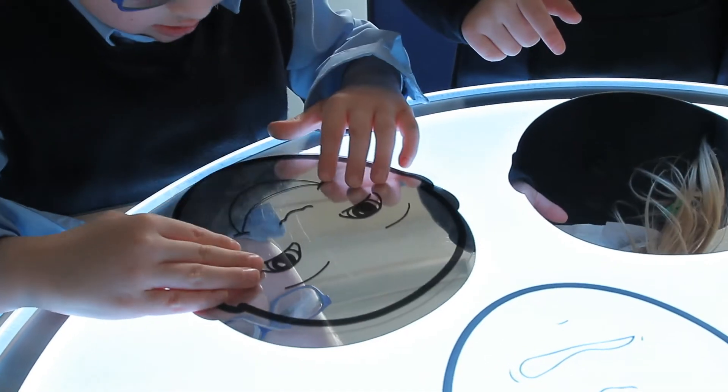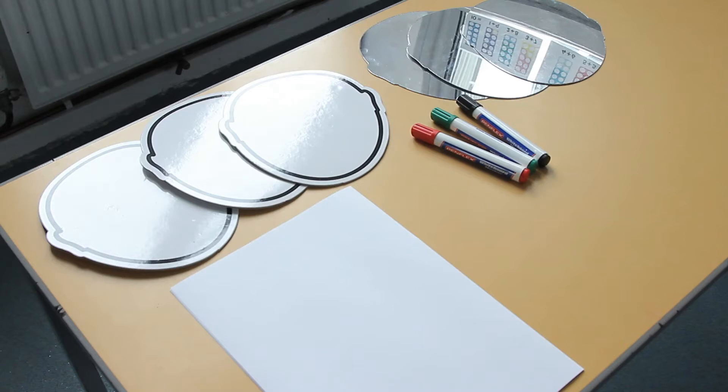To help recognise these emotions in themselves, there are three blank face-shaped mirrors and three white face-shaped boards, which can be written on and wiped off.